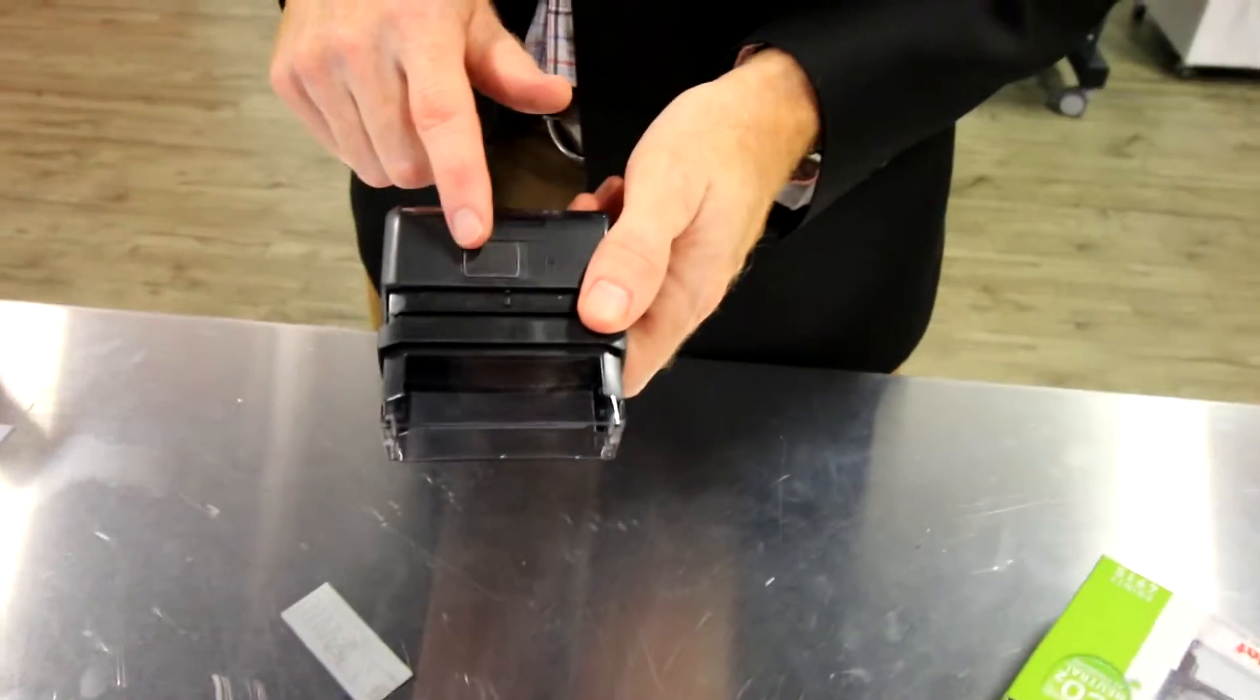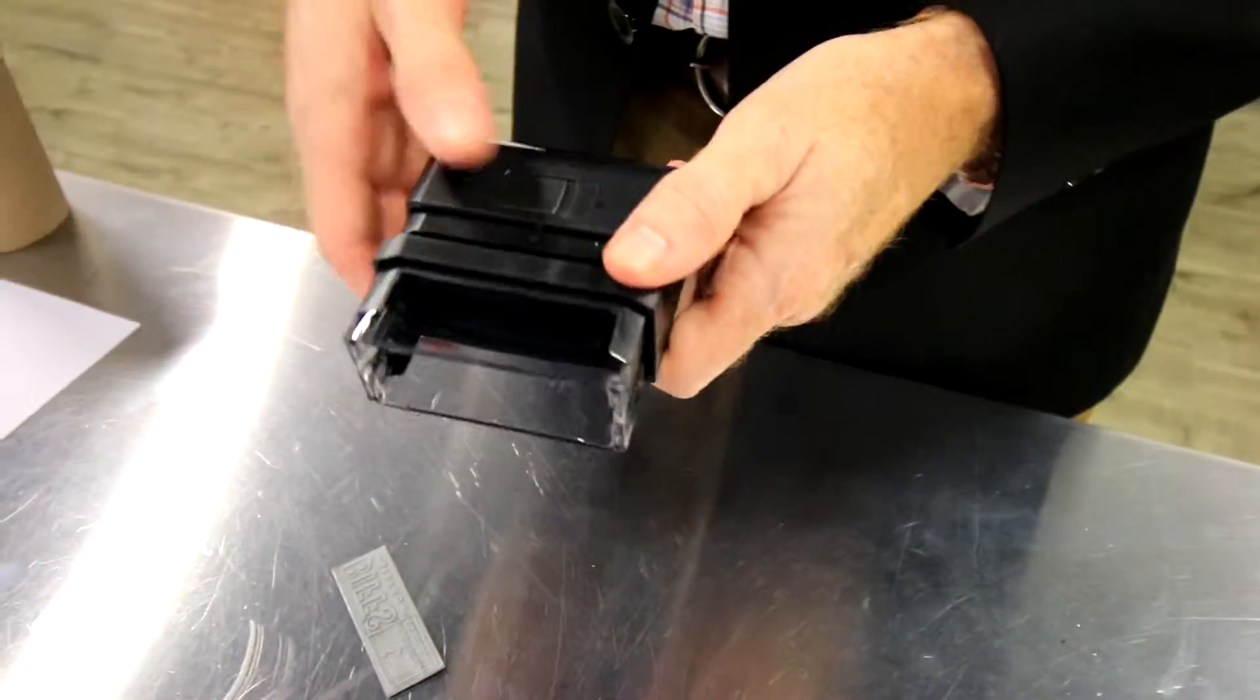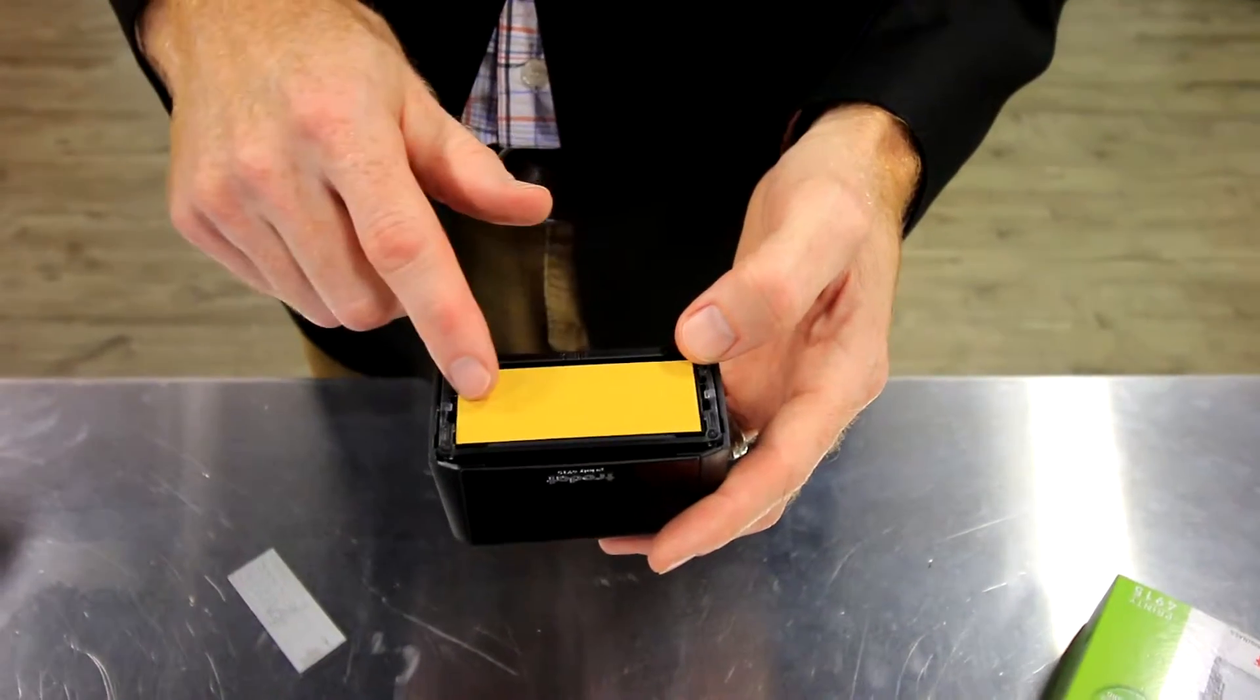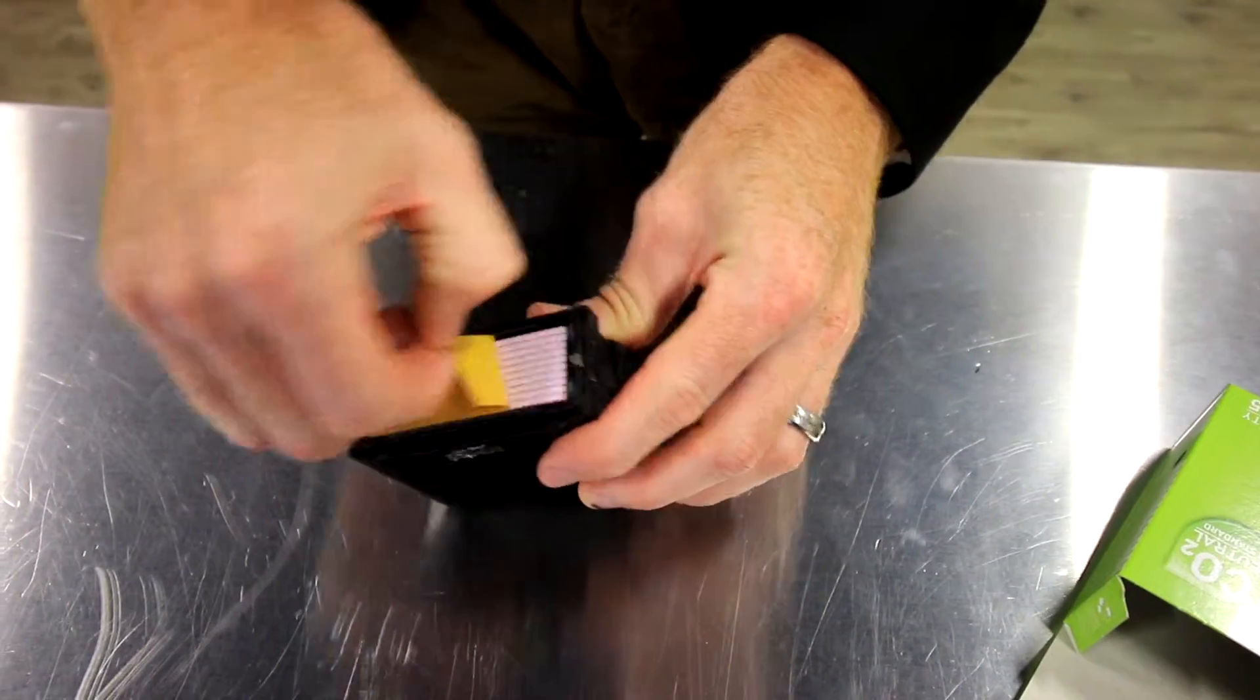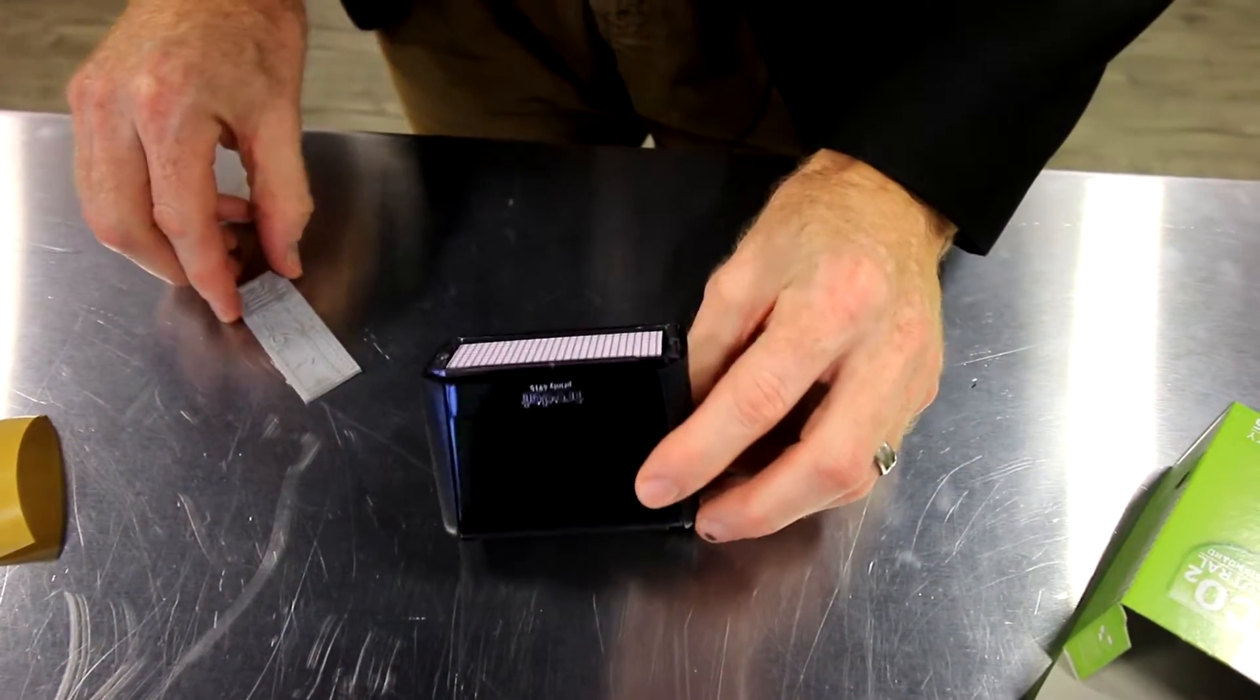Another great feature is Trodat apprentice have a locking mechanism right on the back that keeps the stamp in position to mount the rubber text plate. You simply take off the yellow strip and you're ready to mount the text plate.